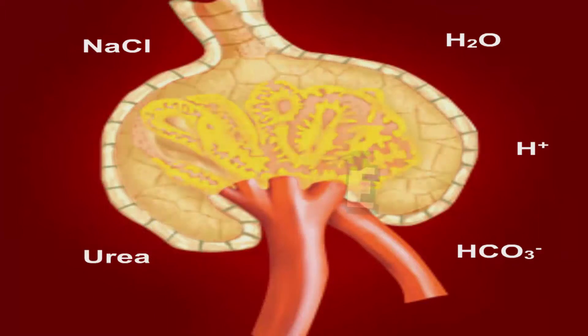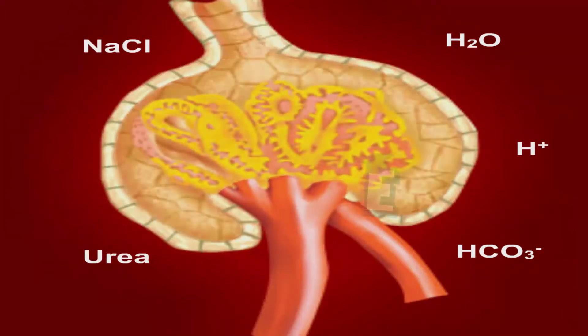The composition of filtration result which enter into the glomerulus are water, sodium chloride, bicarbonate ion, hydrogen ion, urea, glucose, amino acid, and medicine residue.